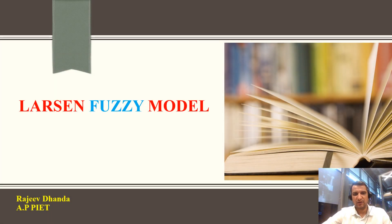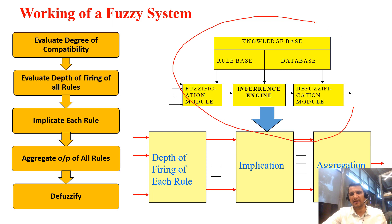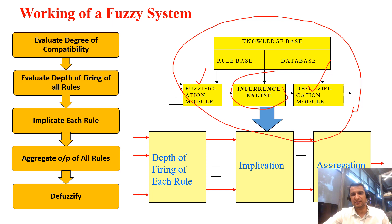Today I will discuss the Larsen fuzzy model. In the last video I discussed the Mamdani fuzzy model. In a fuzzy system there are four subsystems: fuzzification, defuzzification, inference engine, and knowledge base. The inference engine is further classified into three main parts: firing, implication, and aggregation.